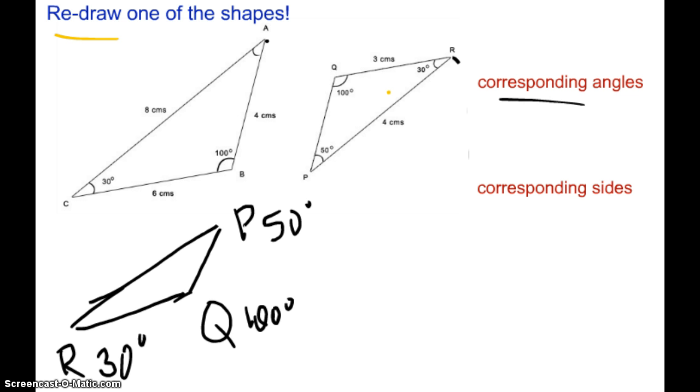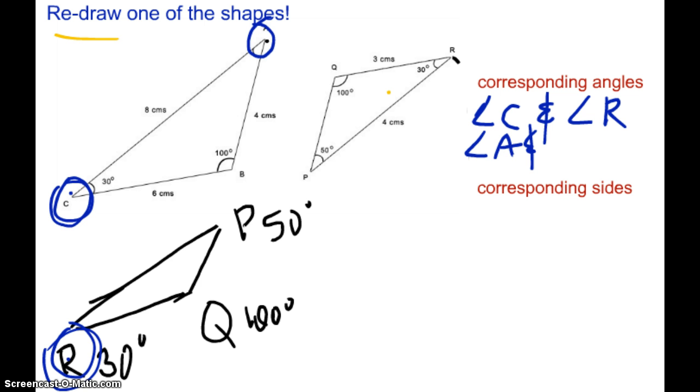So now I'm going to label my corresponding angles. So all you're going to have to do is say, well, angle C corresponds with angle R. So angle C and angle R. Notice that I'm not talking about angles within the same shape. I go from one shape to the other. So C corresponds to R. So what do you think angle A corresponds to? Angle A and angle P are corresponding. And then what about angle B? Angle B and angle Q are corresponding. So that's it. That's all for corresponding angles.